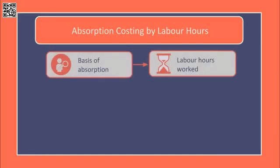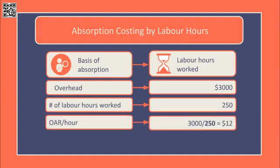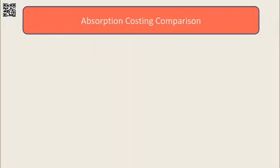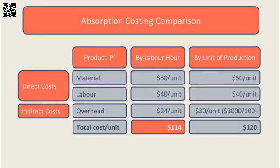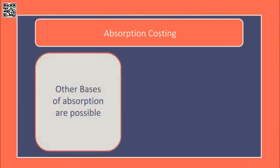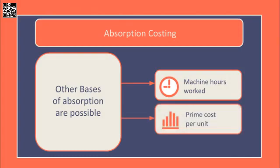Company A may have decided to absorb its overhead based on the number of labour hours worked. If 250 labour hours had been worked in the period, the overhead would be absorbed at $12 per labour hour. If each unit of Product P required 2 labour hours, the overhead absorbed by each unit would be $24 (2 hours × $12 per hour), and the total cost per unit of Product P would equal $114. Under absorption costing, Company A could also have absorbed overhead using machine hours or the prime cost of each unit as a basis of absorption.